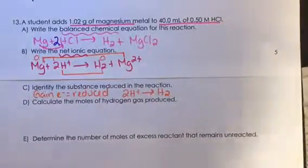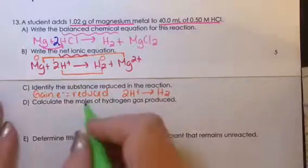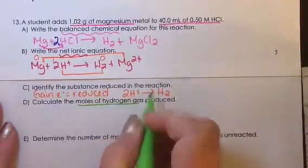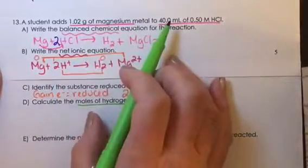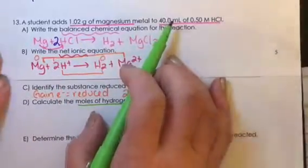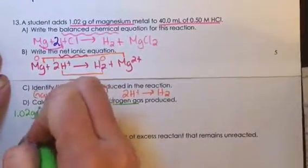So the next question, calculate the moles of hydrogen gas produced. We were given the starting amounts of two reactants, so we have to do the limiting reactant first. We'll start with the magnesium. There was 1.20 grams.